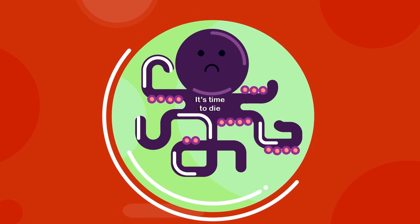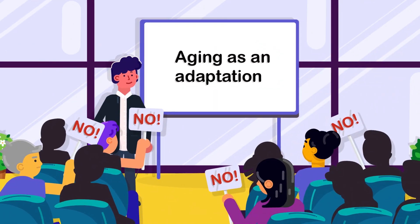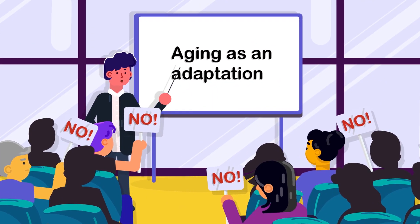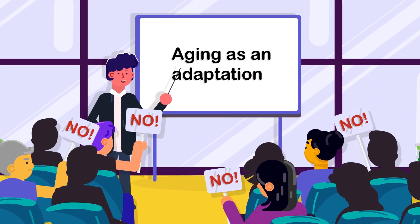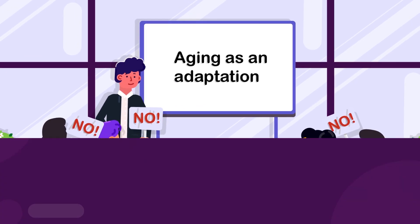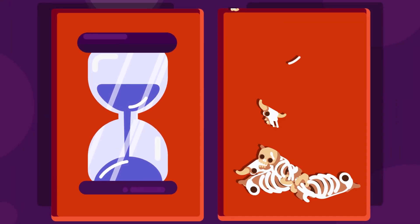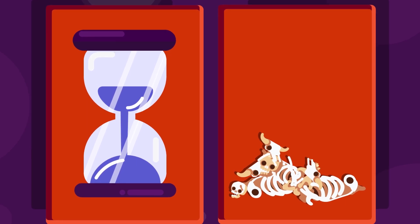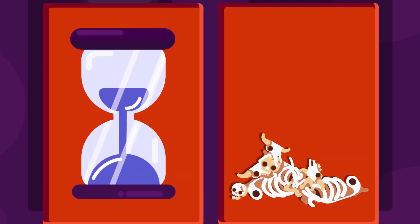However, almost all biologists refuse to consider the hypothesis that for organisms in general, the body knows when it is time to die and grows more and more prone to death as a result of active self-destruction pathways.